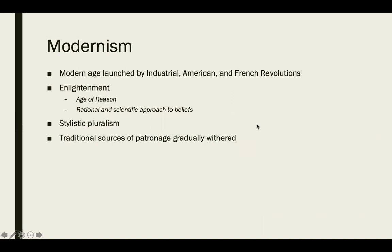What we refer to as modernism is what starts happening during the 18th and 19th centuries. This is when the modern age is launched by the industrial, American, and French revolutions. There's a lot of change — it's sort of like the modern-day Renaissance. We see this as the time of Enlightenment, or the Age of Reason, where we start thinking more in rational and scientific approaches to beliefs rather than totally relying on religion.